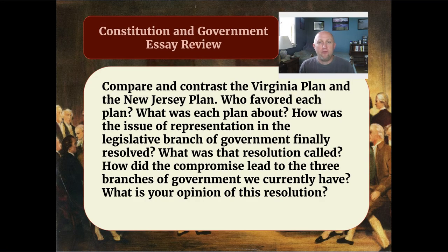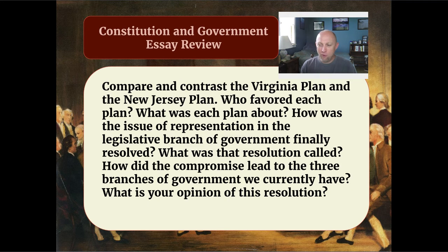Let's go over the prompt that is the basis of the essay that you need to write for your exam. Compare and contrast the Virginia Plan and the New Jersey Plan. Who favored each plan? What was each plan about? How was the issue of representation in the legislative branch of government finally resolved? What was that resolution called? How did the compromise lead to the three branches of government we currently have? And what is your opinion of this resolution?